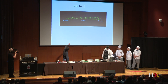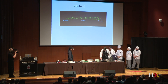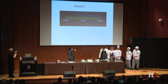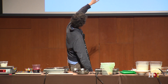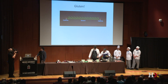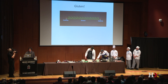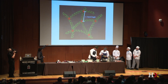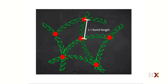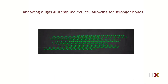When you make bread, there's a molecule in wheat called gluten — actually it's two molecules: glutenin and gliadin. These are proteins that form cross-links with each other, sticking together to form a gel. When you knead them, the molecules tend to line up. They're very long and like to stick to each other through short-range interactions.